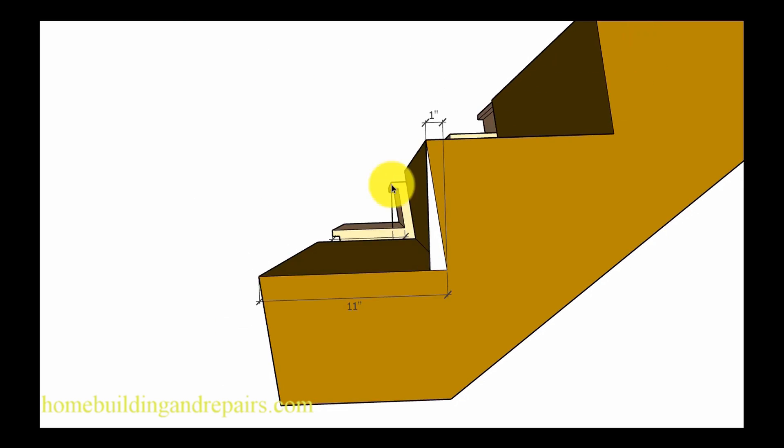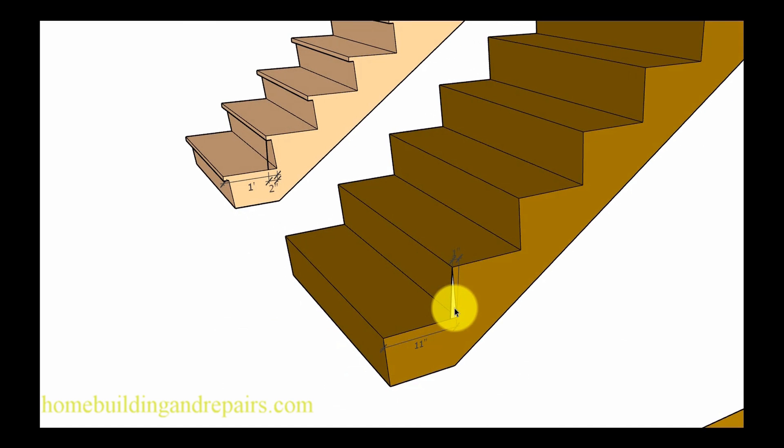Now would be a good time to point out that the maximum distance most of the time for either an overhang or an undercut is usually going to be about an inch and a quarter. However you would need to check with your local building department to verify your local building codes.